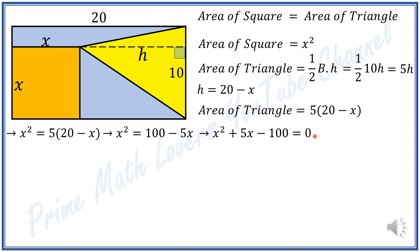We can solve this using the quadratic formula, which states that for a quadratic equation ax squared plus bx plus c equals 0, x equals minus b plus or minus square root of b squared minus 4ac, divided by 2a. In our equation, a is 1, b is 5, and c is negative 100.